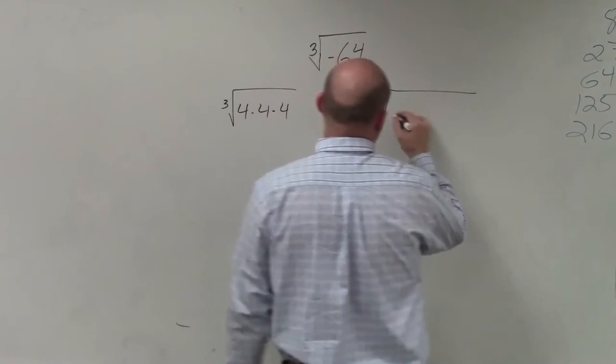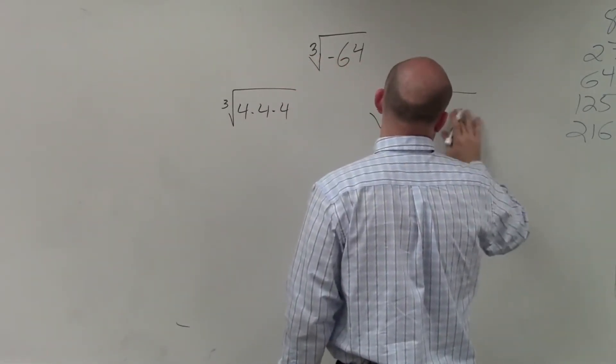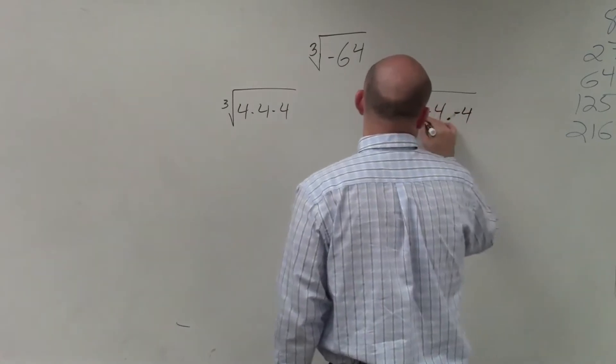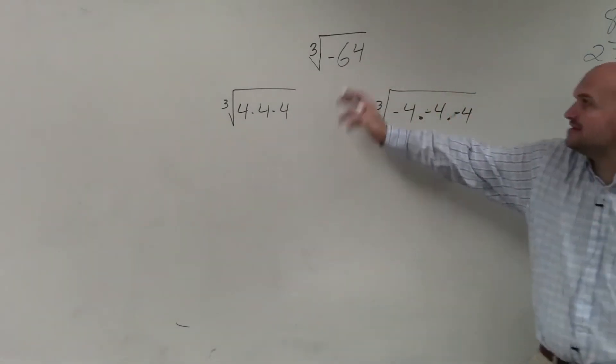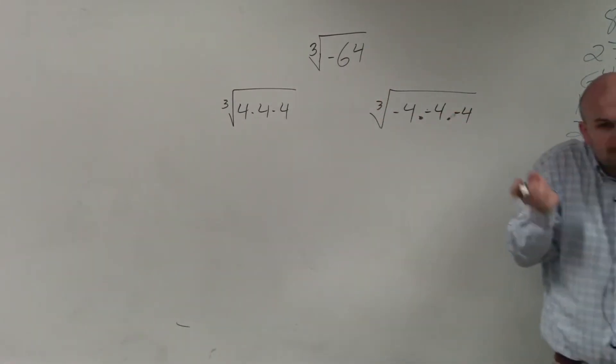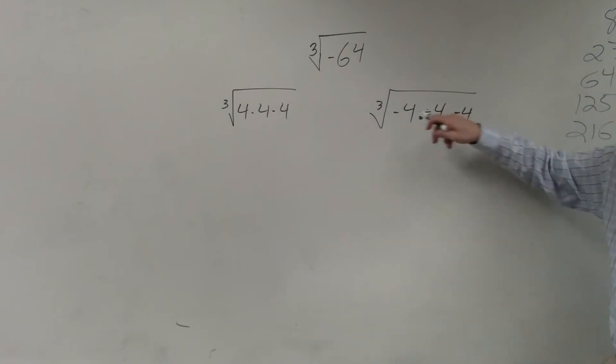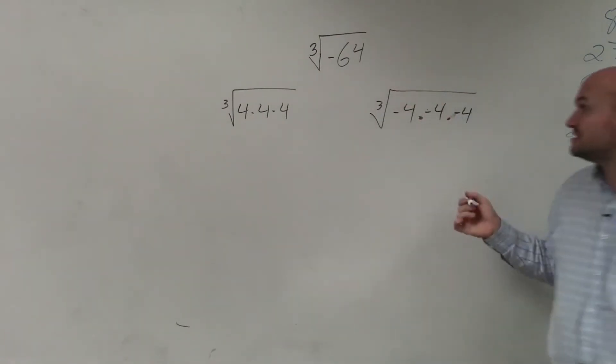So I could do the cube root of 4 times 4 times 4. Or, since it has to be negative 64, I see that 4 times 4 times 4 gives me positive 64. But remember, the cube root is saying what number multiplied by itself 3 times gives me negative 64. And that ends up being negative 4. Do you guys see how negative 4 multiplied by itself three times is going to give you negative 64. So the answer is just negative 4.